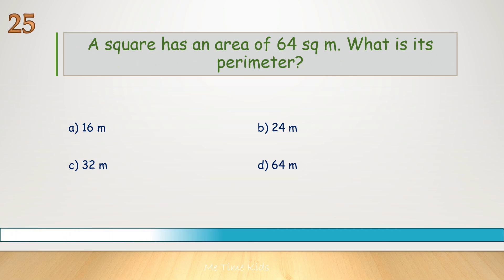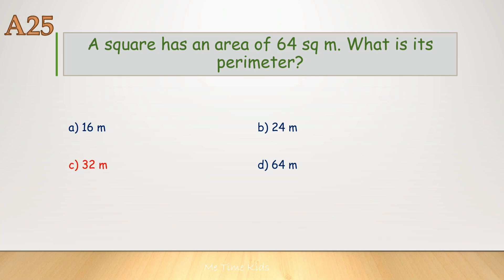A square has an area of 64 square meters. What is its perimeter? Correct answer is C, 32 meters.